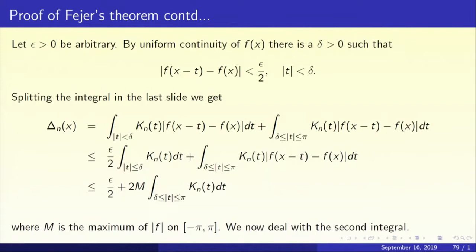I would like to make one comment. It is exactly in this proof where we used several times that the Fejér kernel is positive. In the first piece, when mod t less than delta, we used mod f(x minus t) minus f(x) less than epsilon by 2 by uniform continuity, and the integral of k_n(t) dt equaled 1. If you try the same game with the Dirichlet kernel and try to prove that every continuous function has a convergent Fourier series, you will fail — because the result is false.